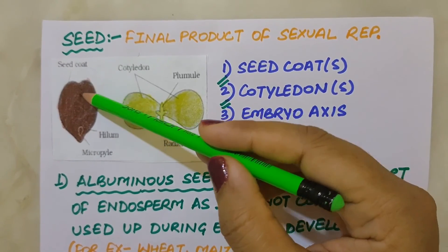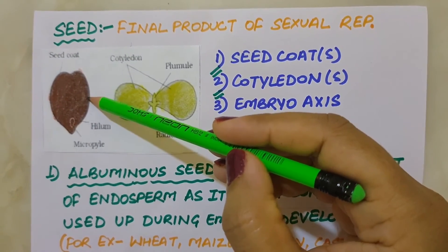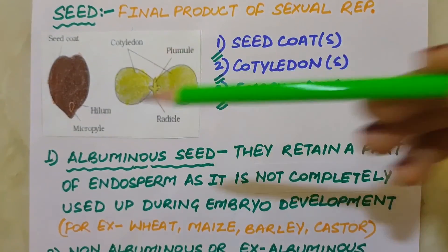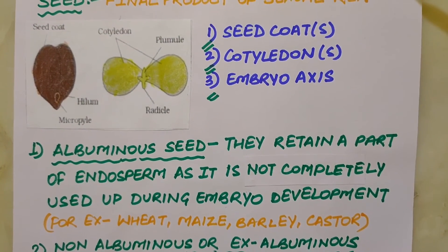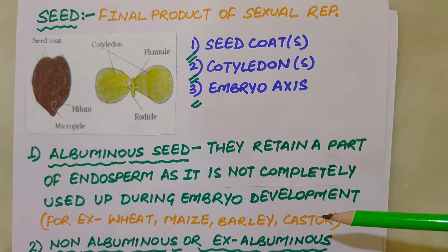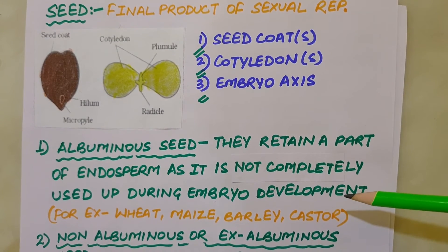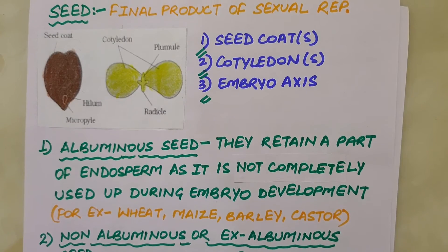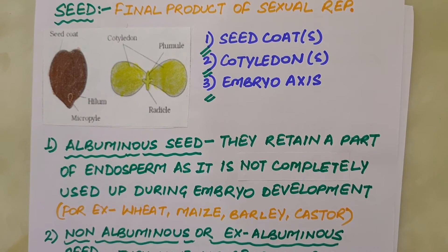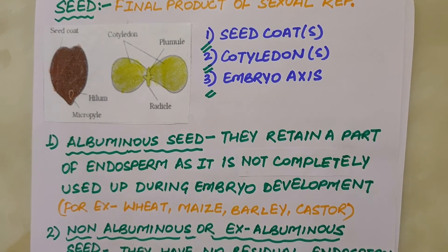A seed is enclosed in a tough outer protective covering called the seed coat, which is actually the hardened integuments of ovules. The micropyle portion remains as a small pore in the seed coat and facilitates entry of oxygen and water into the seed during germination. As the seed matures, its water content is reduced and seeds become relatively dry. The general metabolic activity of the embryo slows down, and the embryo may enter a state of inactivity called dormancy. Or, if favorable conditions are available — adequate moisture, oxygen and suitable temperature — they germinate. Seeds offer several advantages to angiosperms.